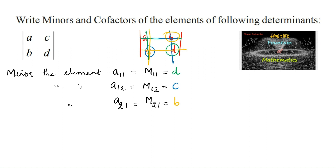And the last element, A22 — minor of the element A22, which is M22, is equal to — the fourth element D, deleting its row and column, we are left with only one element, that is A. So, M22 equals A. The minors are: D, C, B, A for the elements. And now we can consider the cofactors.